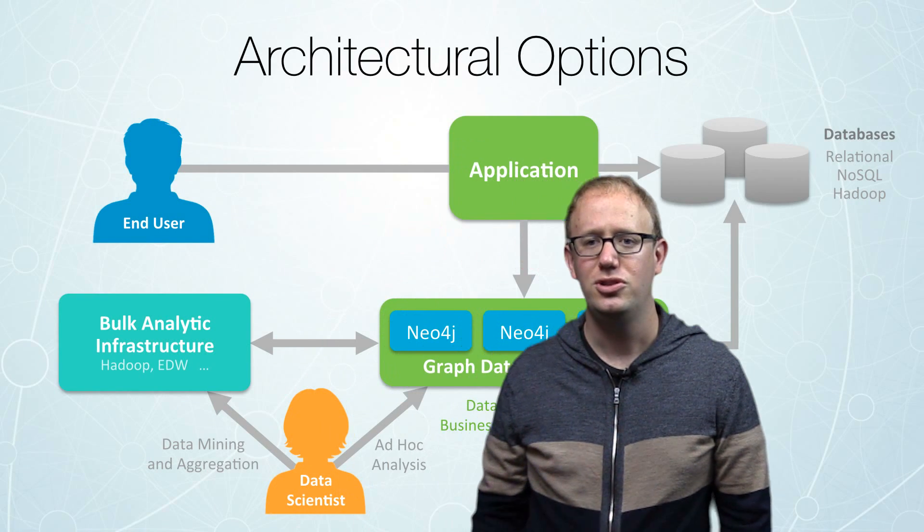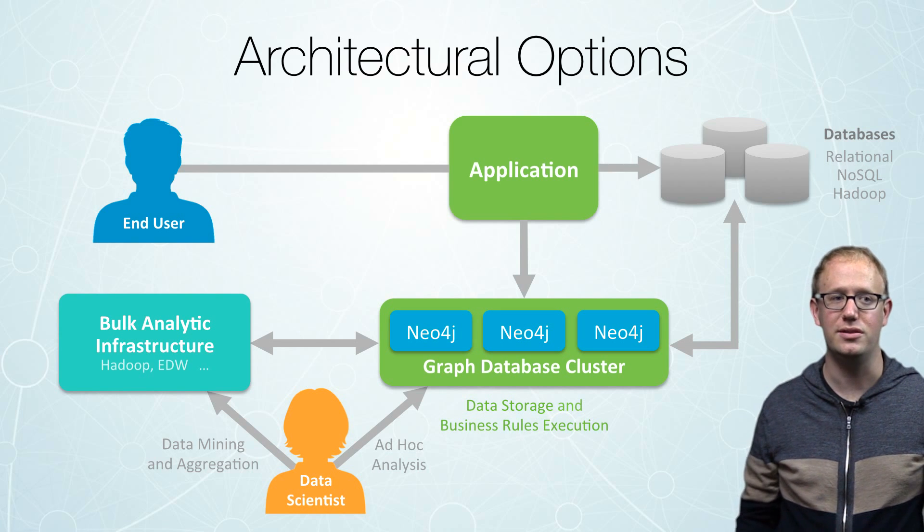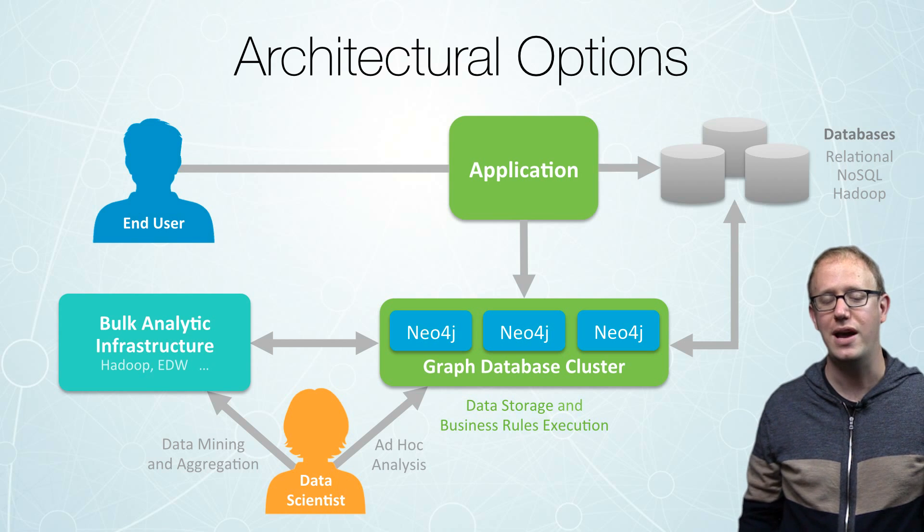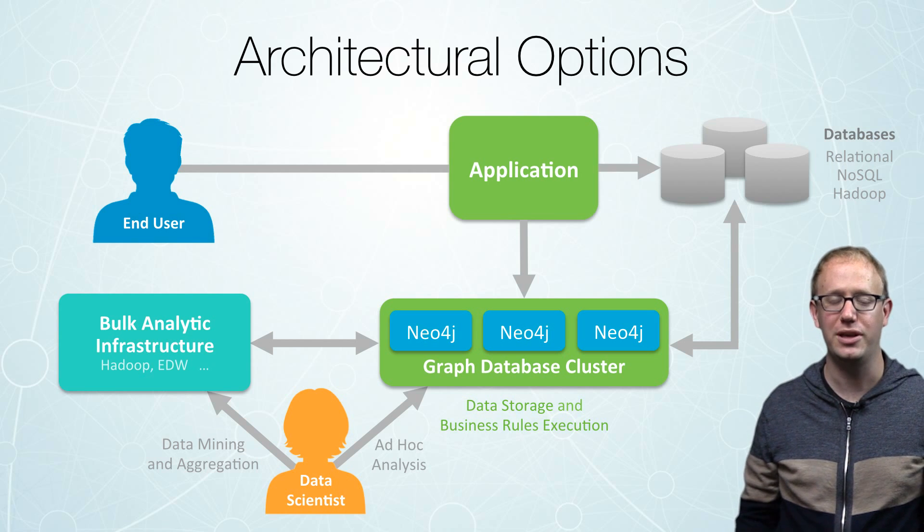We believe in the concept of polyglot persistence — your application will access the database that best suits the type of data you need. Tabular data might be best stored in a relational database, while truly connected data goes in your graph database. We believe you should have those other databases sitting alongside Neo4j as part of your application's architecture, while your data scientists also access these databases and bulk analytic infrastructure to determine what queries should be coded into your application to make real-time decisions.